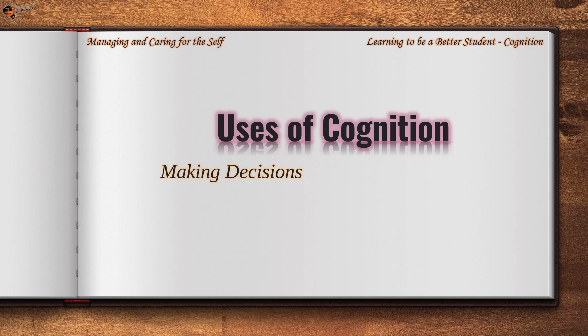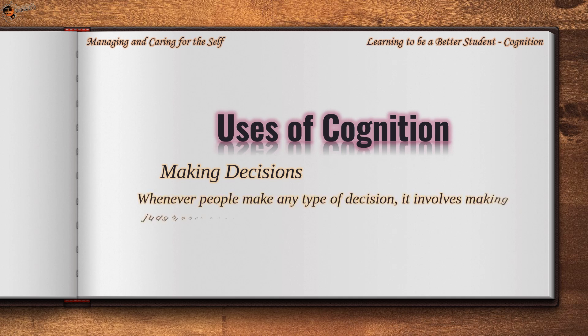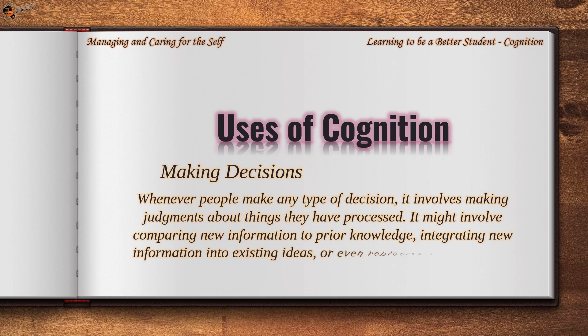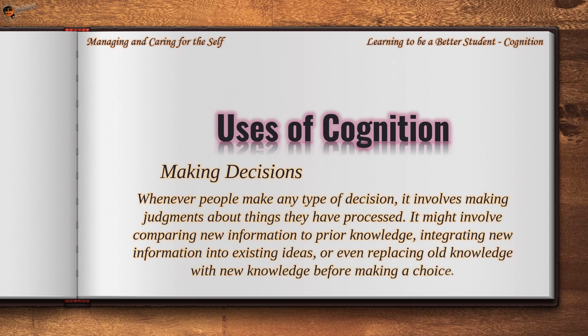Whenever people make any type of decision, it involves making judgments about things they have processed. It might involve comparing new information to prior knowledge, integrating new information into existing ideas, or even replacing old knowledge with new knowledge before making a choice.